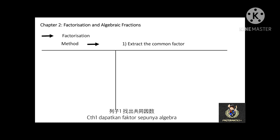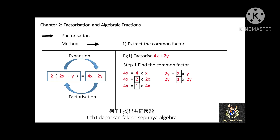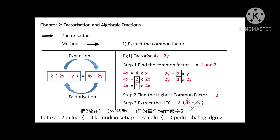Factorization example by extracting the common factor. For example, factorize 4x plus 2y. Step 1 is to find the common factor of 4x and 2y. 4x can be written as 4 times x, 2 times 2x, or 1 times 4x. While 2y can be 2 times y or 1 times 2y. Among all these factors, the common factors of 4x and 2y are 1 and 2. Since 2 is the highest common factor, we extract it: 2(2x plus y).